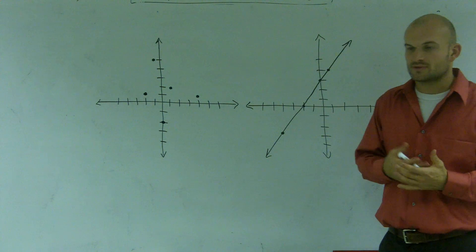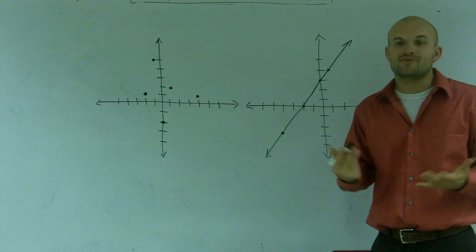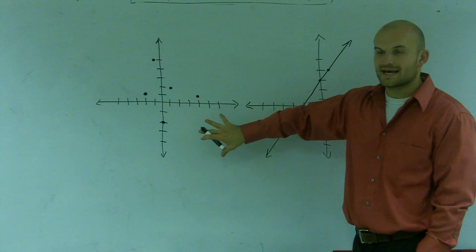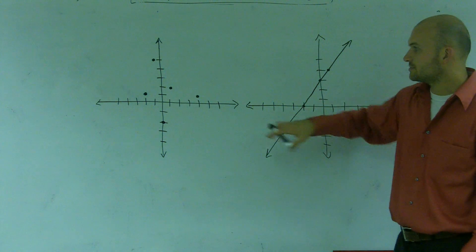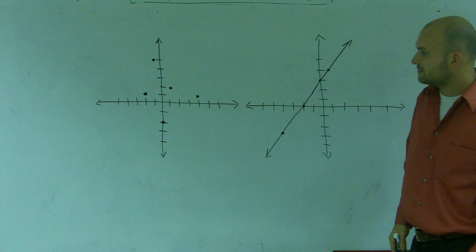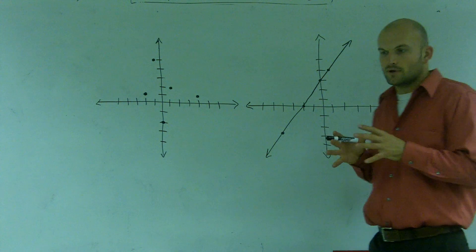So when we're talking about the domain, what we're talking about is all the x values. And when talking about the x values of a graph, what we need to do is we need to say, well, what are the x values? And what I have is I just have one, two, three, four, five points up there.